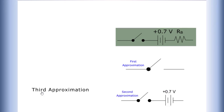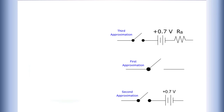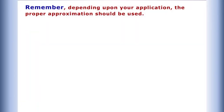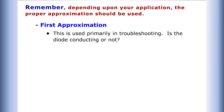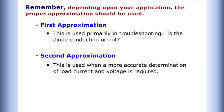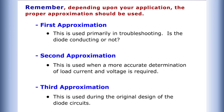Let's match the approximation term to the correct schematic depiction: first approximation, second approximation, and third approximation. Remember, depending upon your application, the proper approximation should be used. To recap: first approximation — troubleshooting, is the diode conducting or not; second approximation — more accurate determination of load current and voltage; third approximation — original design of diode circuits.